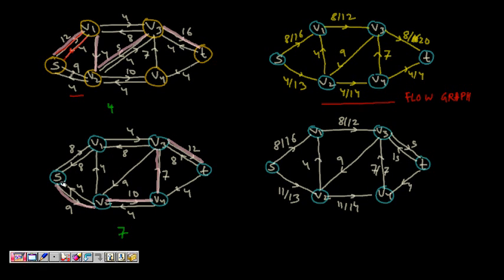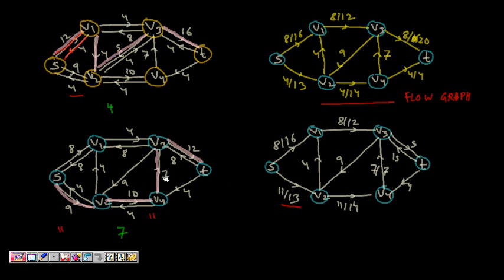From the new residual graph, we find a fourth path: S→V2→V4→V3→T. This path has a minimum residual capacity of 7. We send 7 units: on S→V2, 7 plus previous 4 gives 11 out of 13 used; on V2→V4, now 11 out of 14 used; on V4→V3 (anti-parallel), all 7 out of 7 used; on V3→T, 7 plus 8 gives 15 out of 20 used.